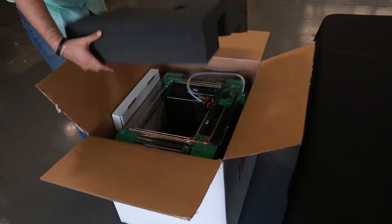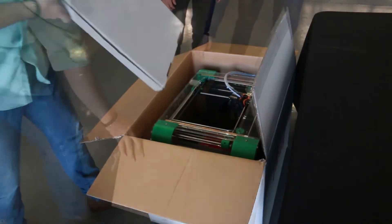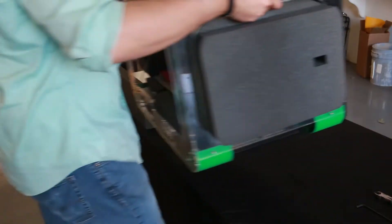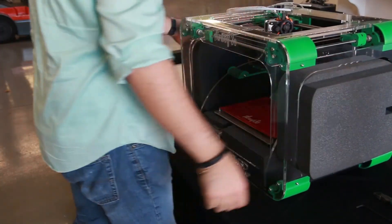Remove the top foam followed by the accessory box. Place both hands on each side of the printer on the handles in the acrylic frame. Set your printer on the table.